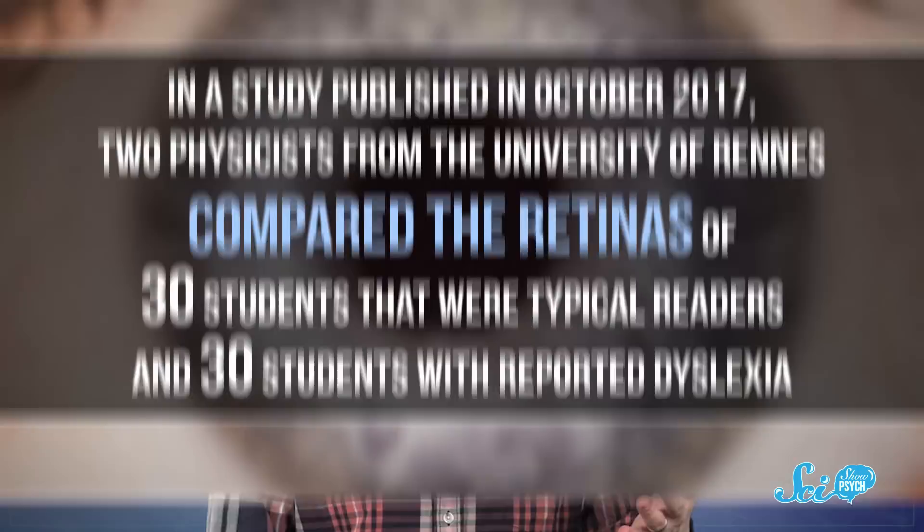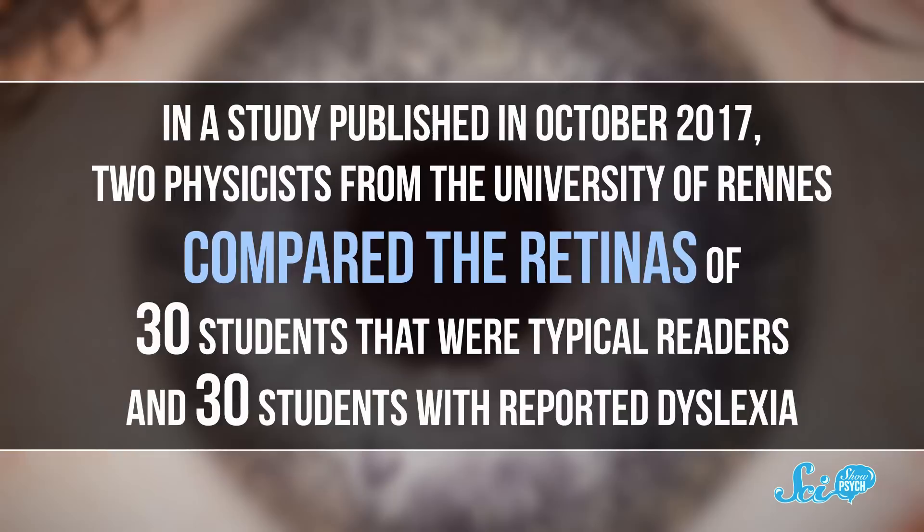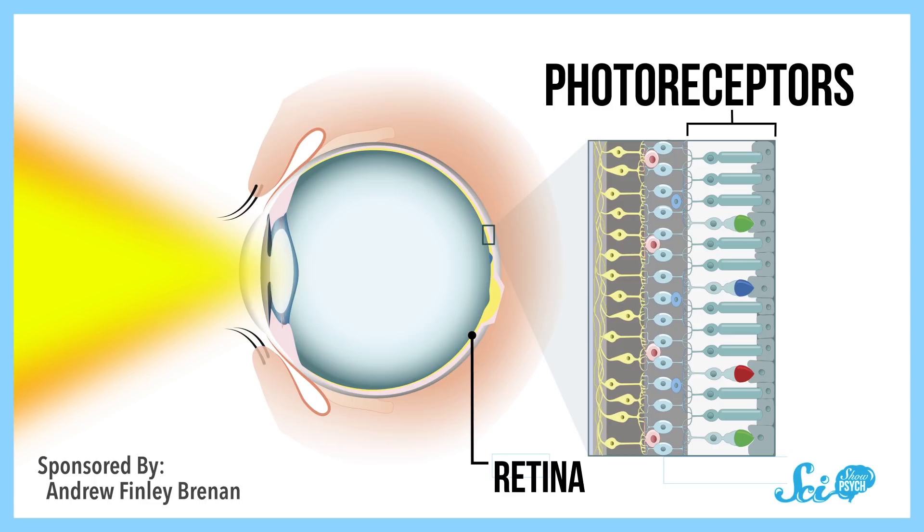In a study published in October 2017, two physicists from the University of Rennes compared the retinas of 30 students that were typical readers and 30 students with reported dyslexia. When you look at something, light shines onto the specialized cells in the back of your eye, called photoreceptors, which then send signals to your brain. And usually, people have a dominant and a non-dominant eye — it's just how we were built.